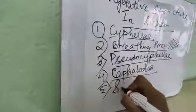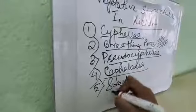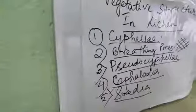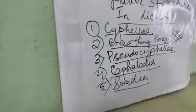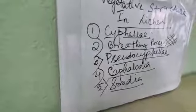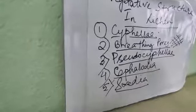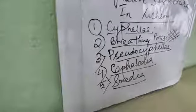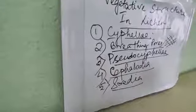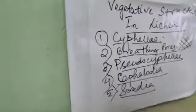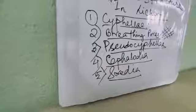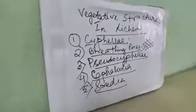Number 5 is Soredia. It is a minute, non-cortical — meaning not growing on the cortex region — round bud-like outgrowth present on the upper surface of the lichen. It is made up of a few algal cells and a few fungal hyphae. The main function of Soredia is that it helps in vegetative propagation, which is a way of vegetative reproduction.